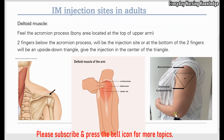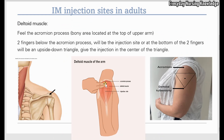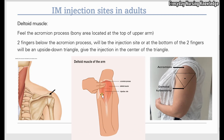Now let's see the injection site of the deltoid muscle. To find the injection site, you feel the acromion process — the bony part of the upper arm. Two to three fingers below the acromion process is your injection site, or you can imagine an upside-down triangle where the center is the injection site. Remember, the deltoid is a small muscle and you cannot give more than one ml of medication into it.